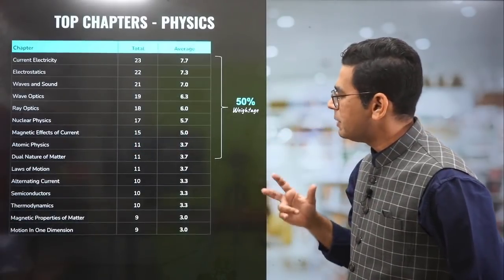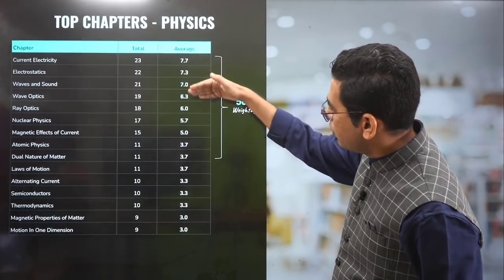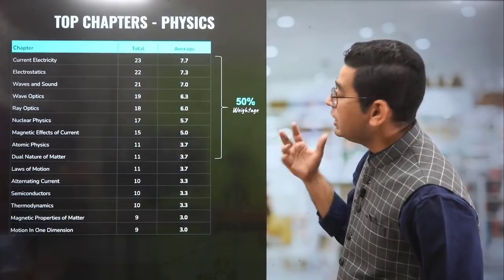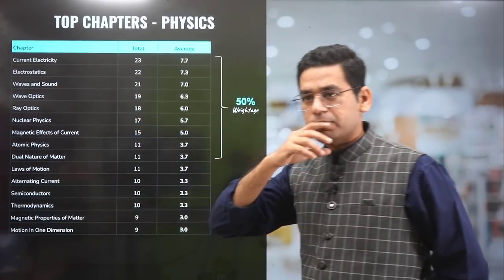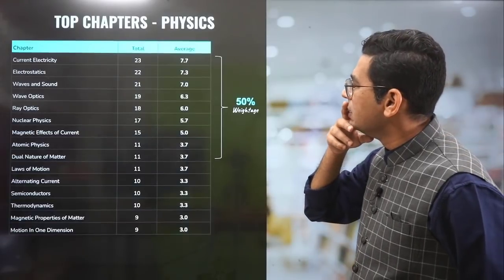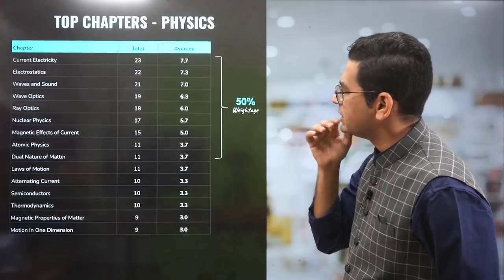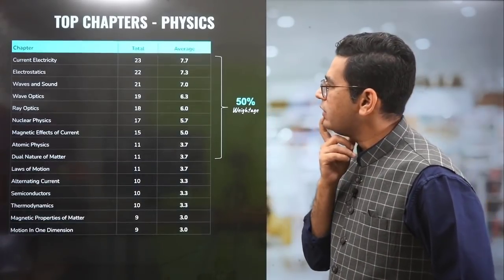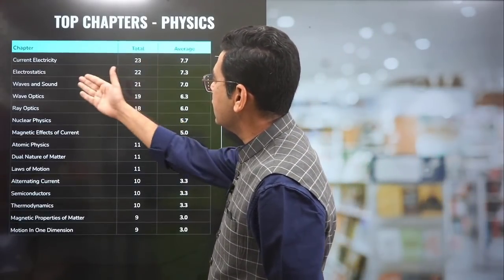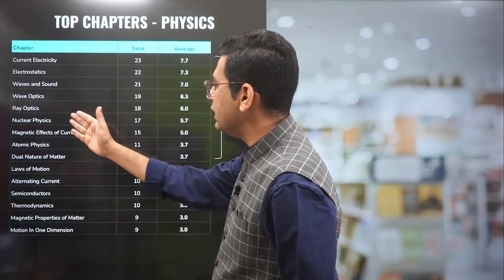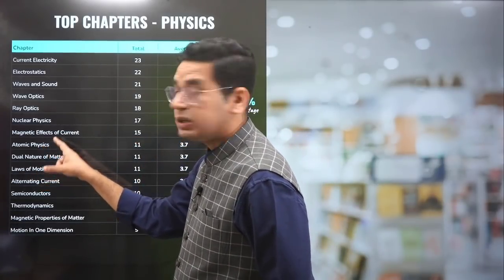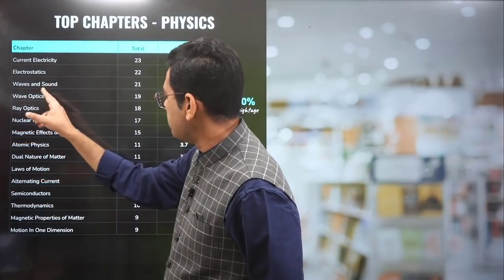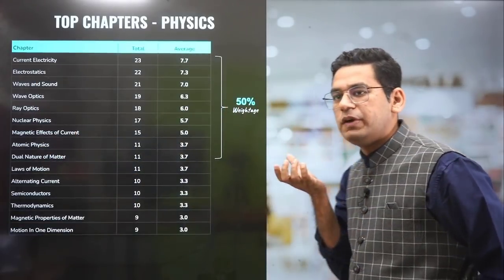Now the weightage of chapters — the top chapters which cover 50% of the weightage. In physics, only 9 chapters cover 50% of the weightage. These include current electricity (23 questions in the last 3 years), electrostatics (22), wave optics, ray optics, nuclear physics, magnetic effects of current, and atomic/dual particle nature. Very few chapters can give you immediately 50% of the weightage of the examination.